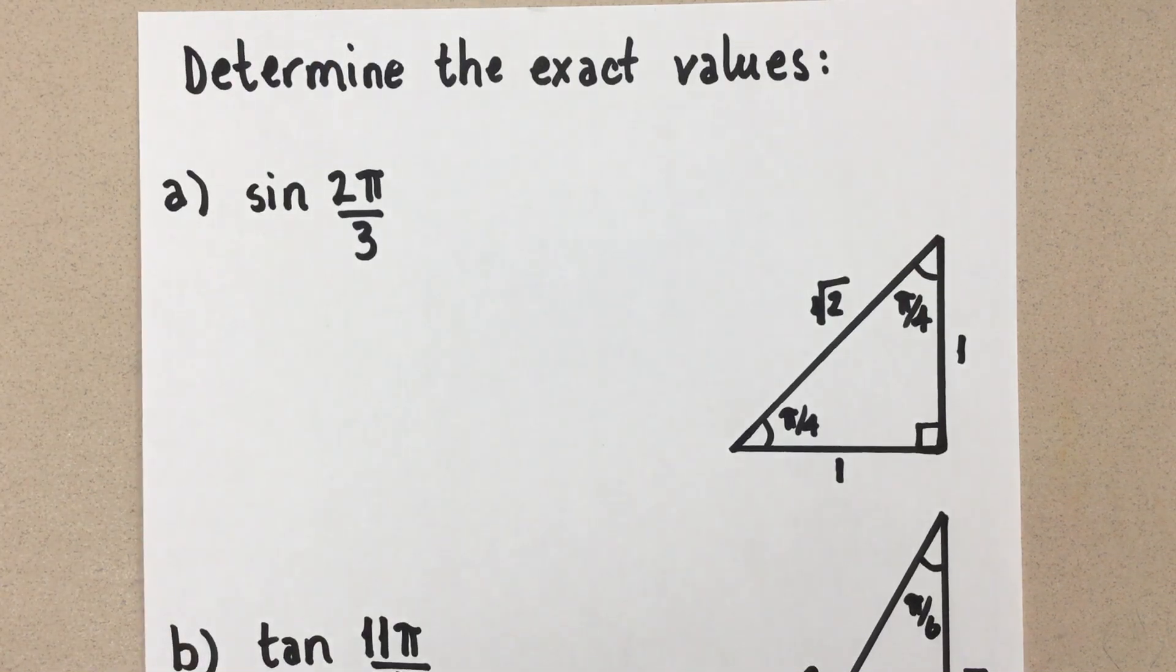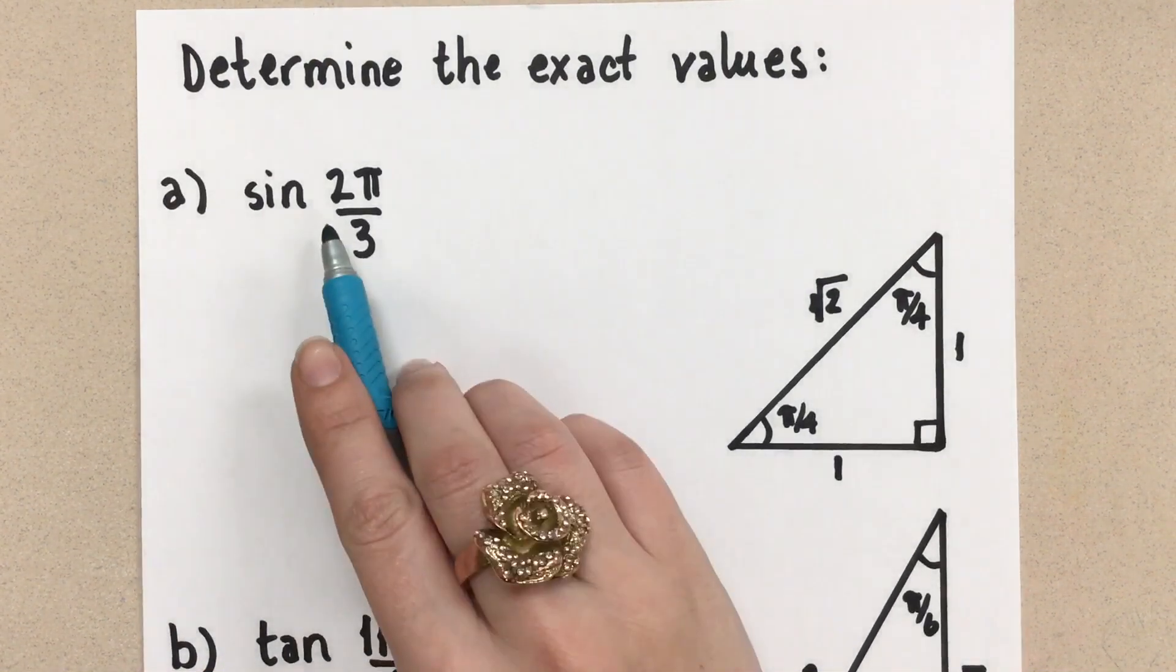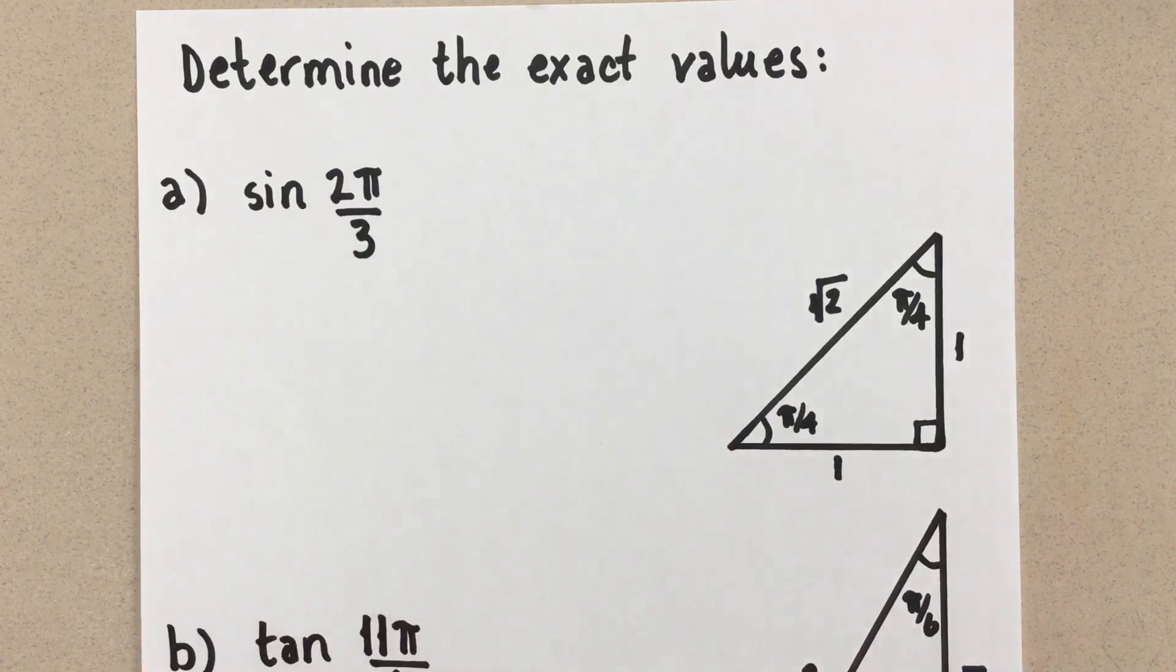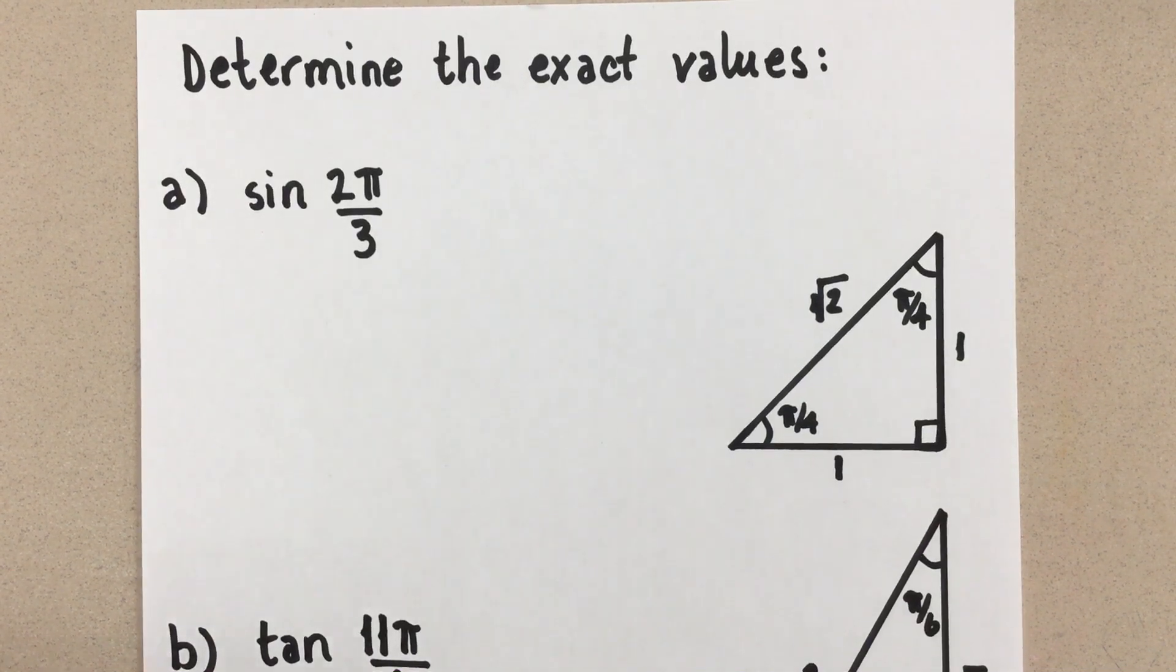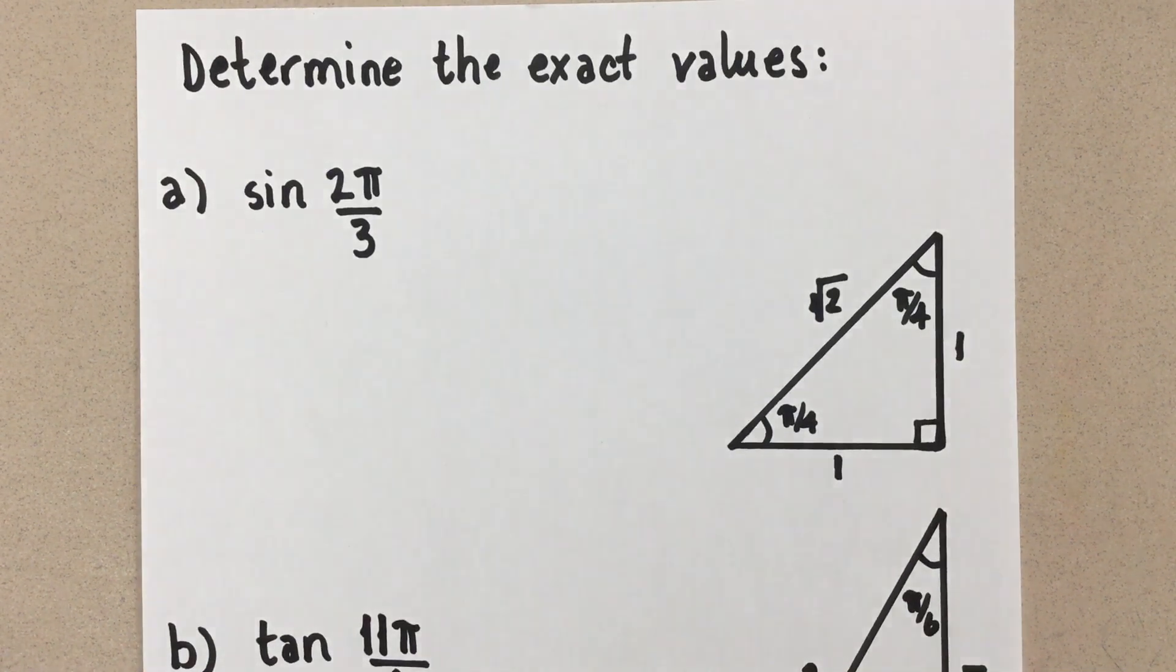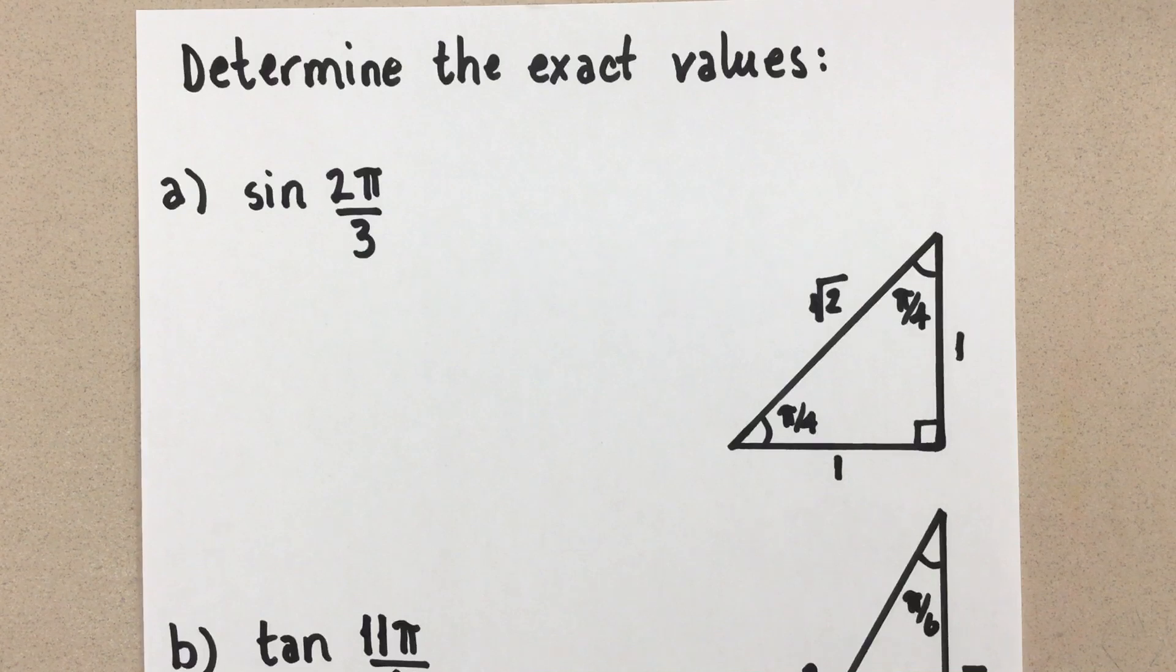Our first question has sine of 2π over 3. We know 2π over 3 is an angle measurement given in radians. The first thing we always want to do is get the visual of where that angle, 2π over 3, lands in the Cartesian plane.